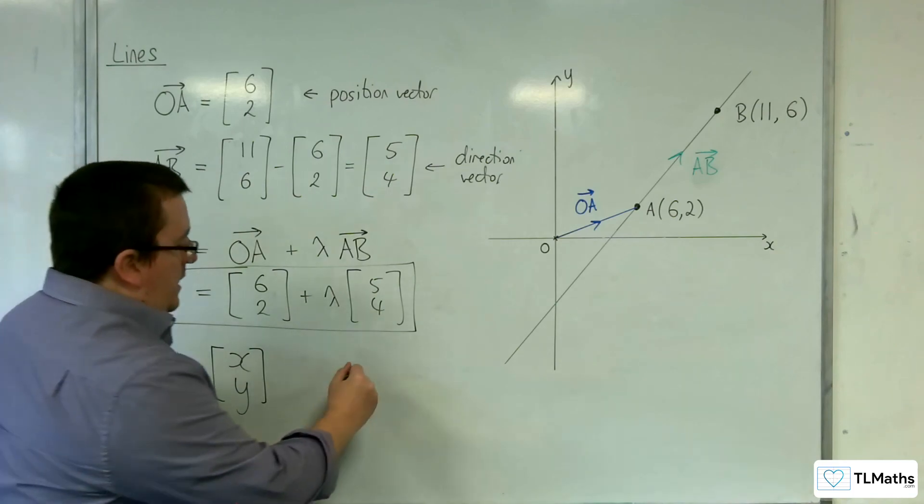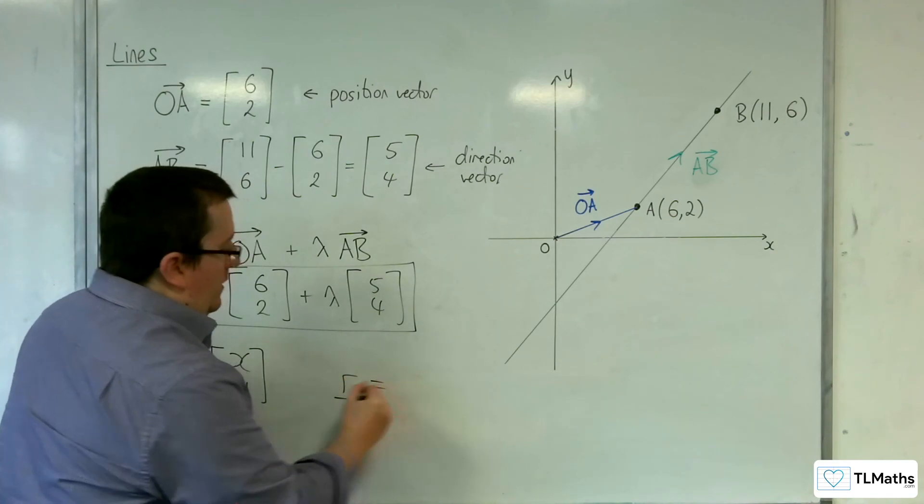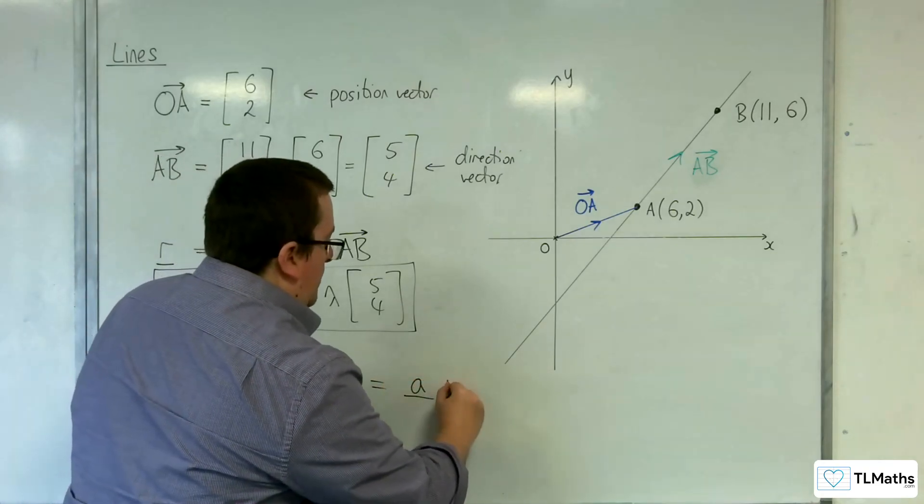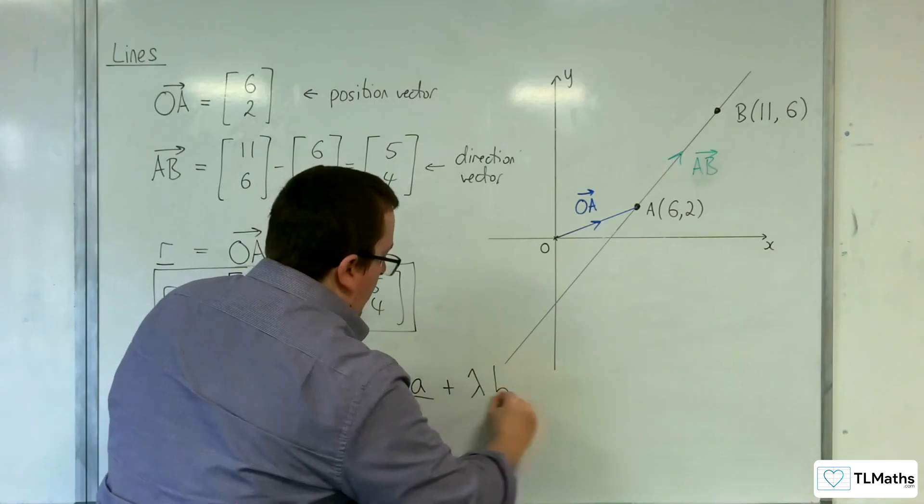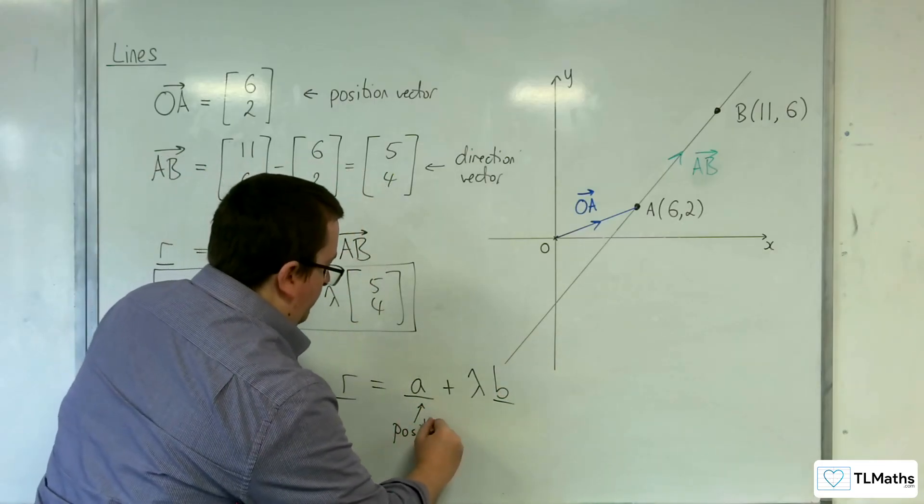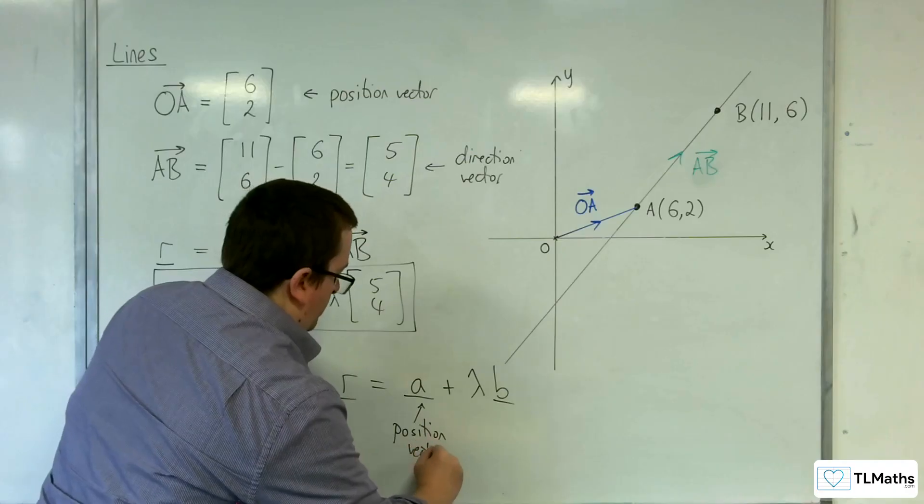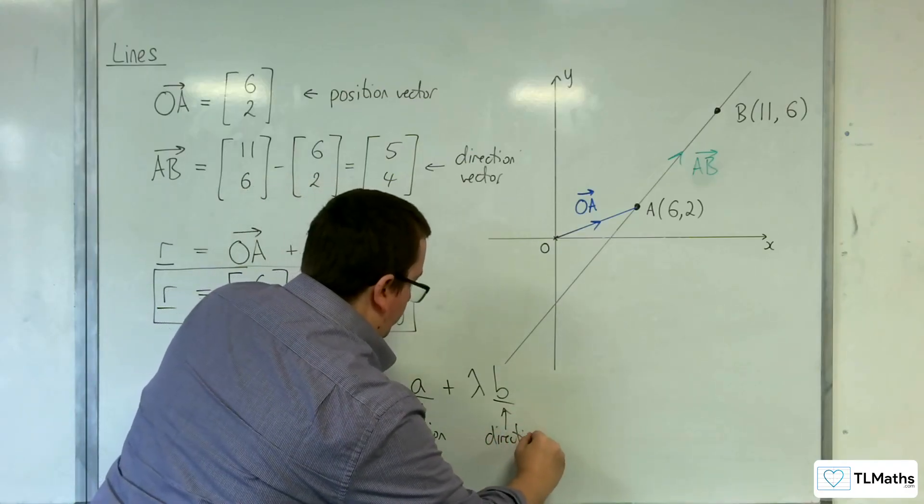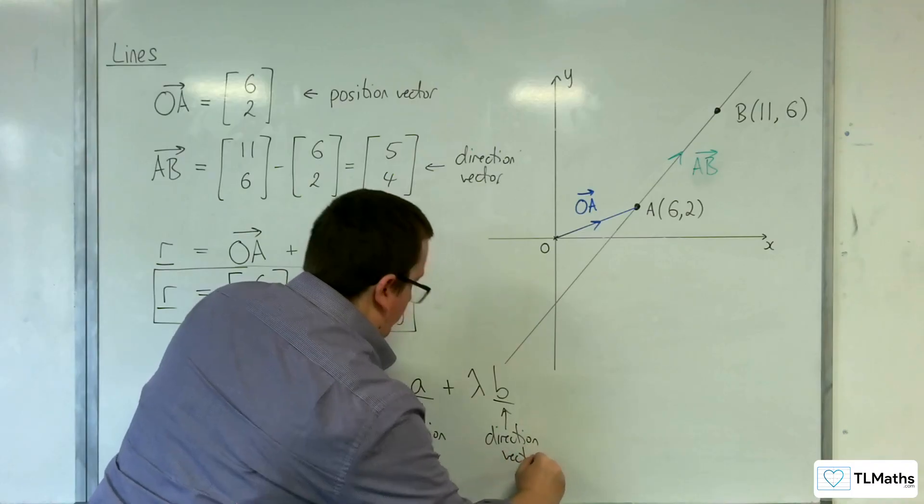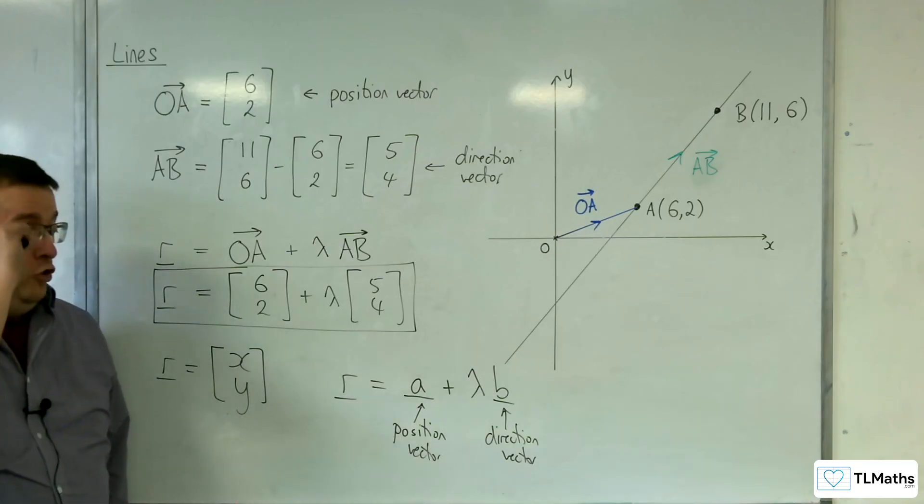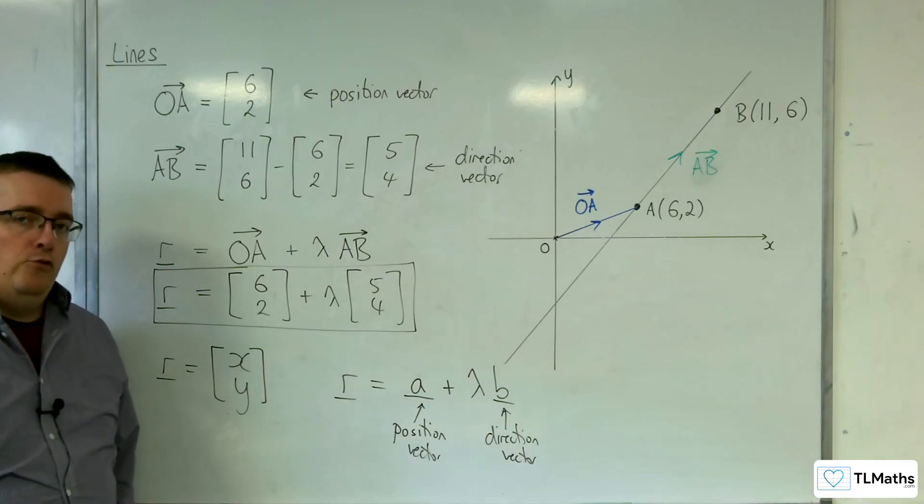So structurally, you have R equals, and it's sometimes written like this, A plus lambda B, where A is your position vector and B is your direction vector. And it is this form that we will use to trade it up to 3D coordinates.